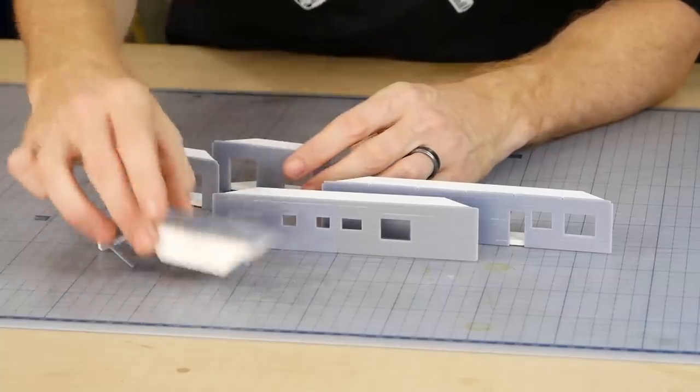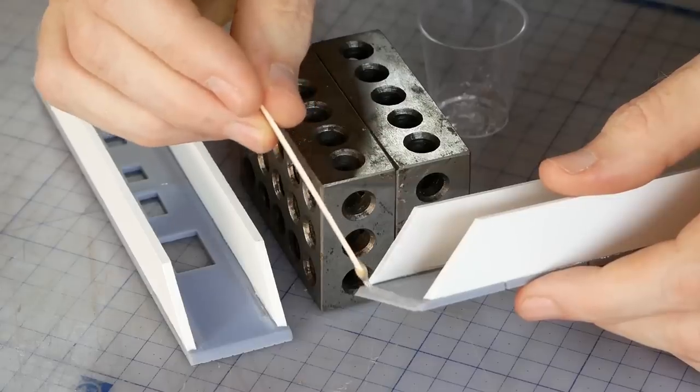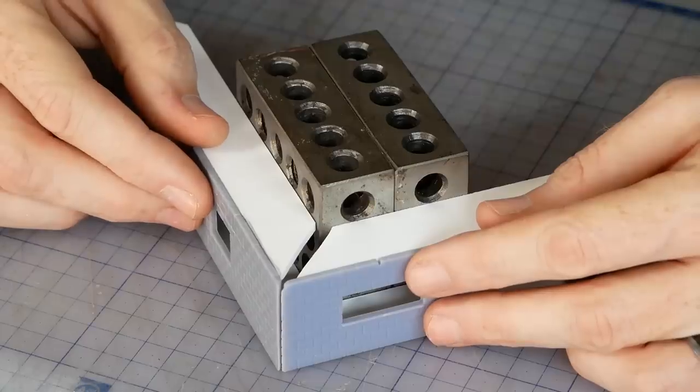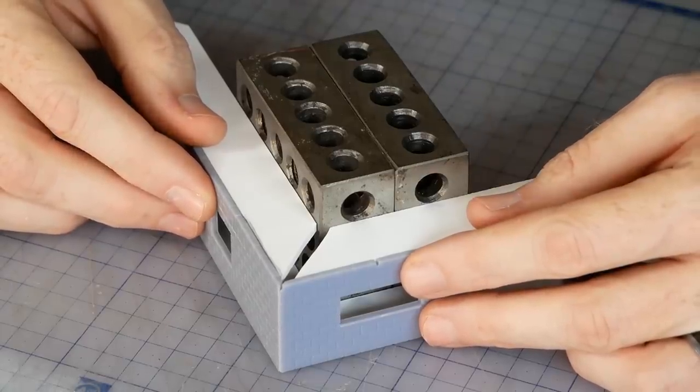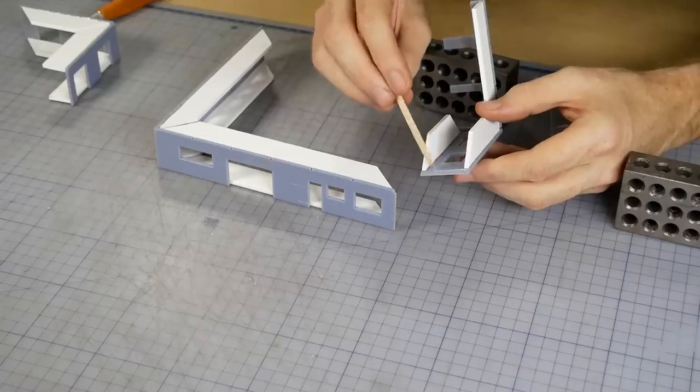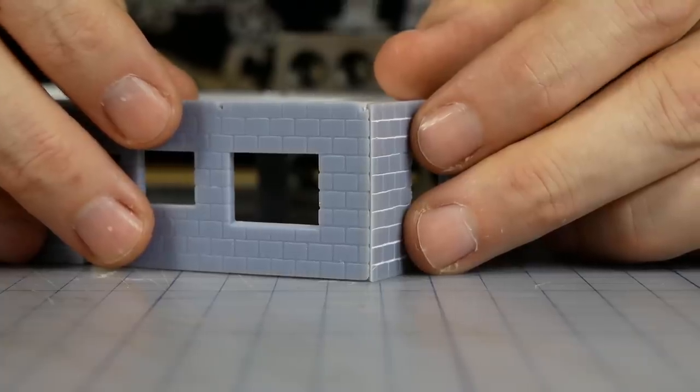This next step shows just how accurate the resin 3D printers actually are. These two wall sections marry up near perfectly, creating a seamless join, and it's like that all the way around the model. There is next to no sanding or filing required to neaten up the edges, which is rare even for commercial kits.